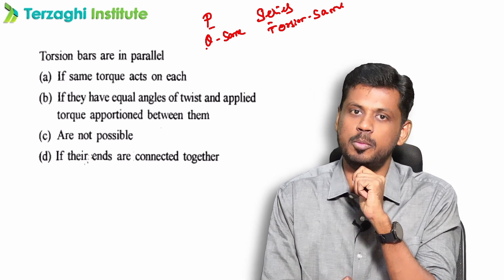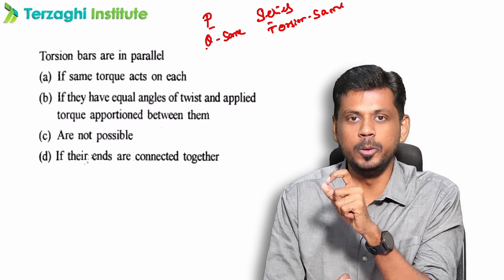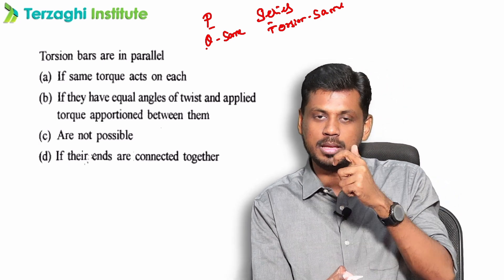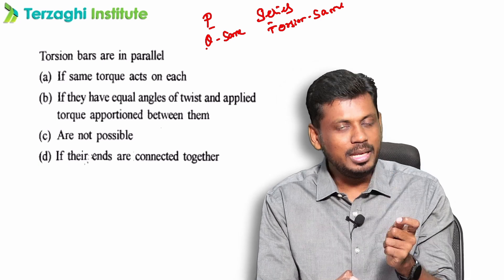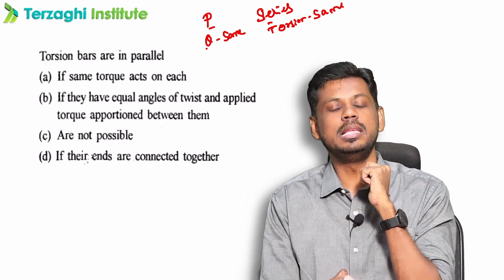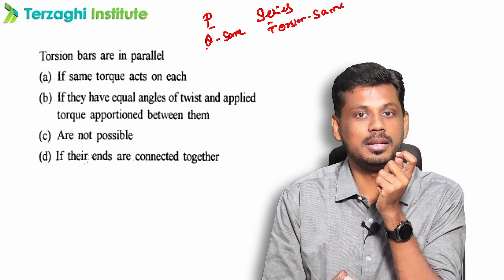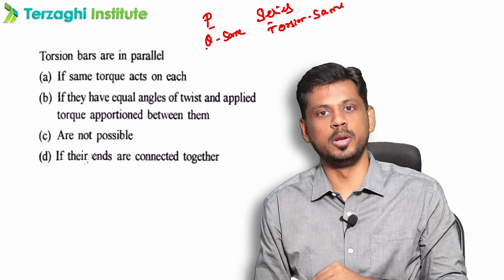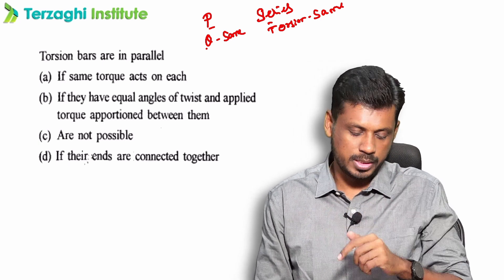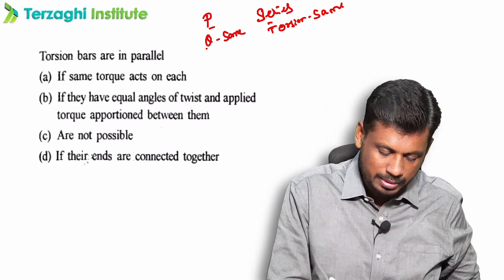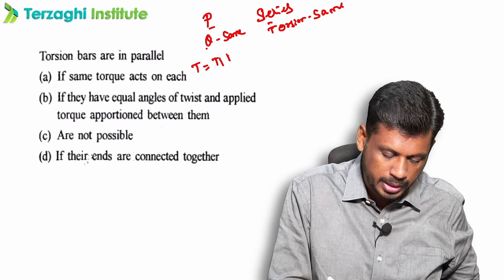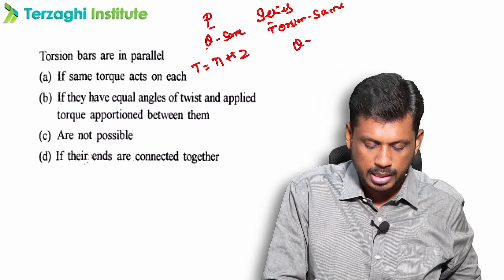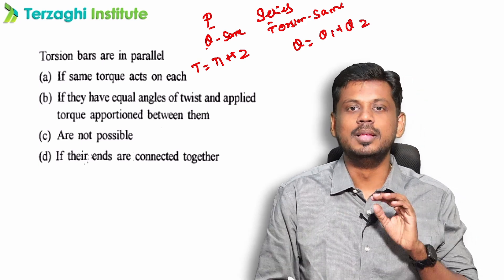The shaft is parallel — theta is the same. The shaft is in series — torsion is the same, T1 plus T2. If the shaft is parallel, theta is the same, and the total torque is T1 plus T2.